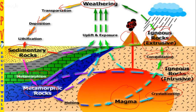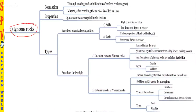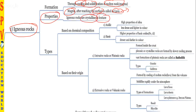Rocks are of three forms: igneous, sedimentary, and metamorphic. Now we shall see them one by one with image-oriented study. Igneous rocks are formed through the cooling and solidification of molten rock — magma inside the earth. When magma reaches the surface, we call it lava; never confuse magma and lava. Magma is the molten stage inside the earth; when it comes out, the same molten material is called lava. Igneous rocks are mostly crystalline in texture, making them much stronger.